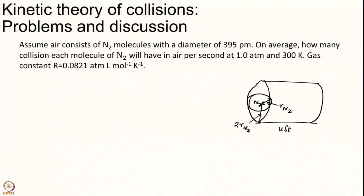This cylinder's length you can go back to this proof will be 2 R N2. It was R A plus R B if A and B were different. A and B are same. So you get 2 R N2 and all that we have to do is to find the volume of the cylinder.